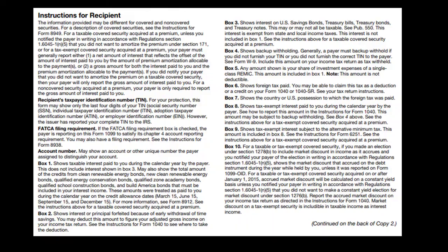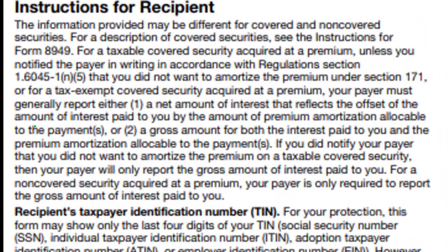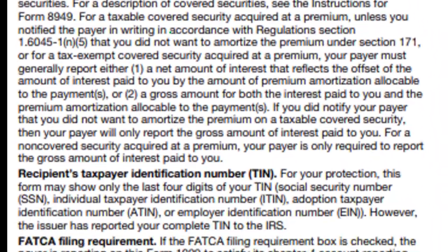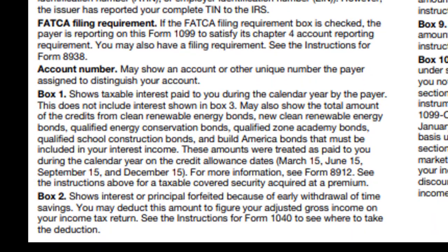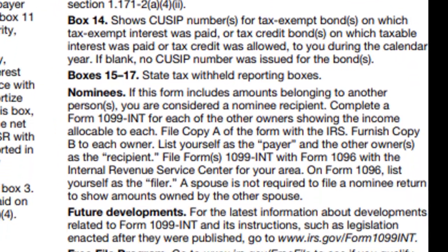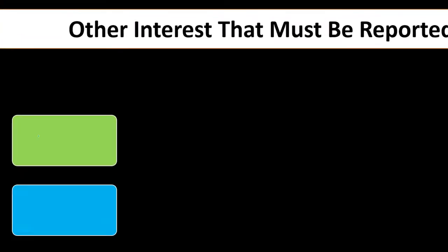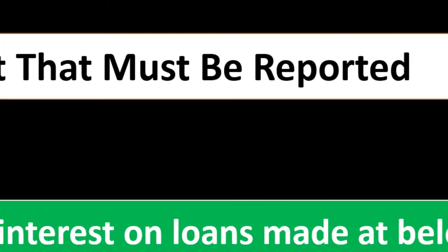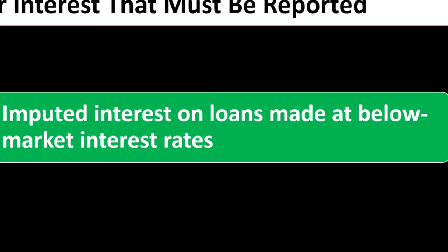Many of the other boxes may not always apply, but they could from time to time. If they do apply, you can look at the instructions for more detail. Other interest that must be reported includes imputed interest on loans made at below-market interest rates, which is an uncommon scenario.